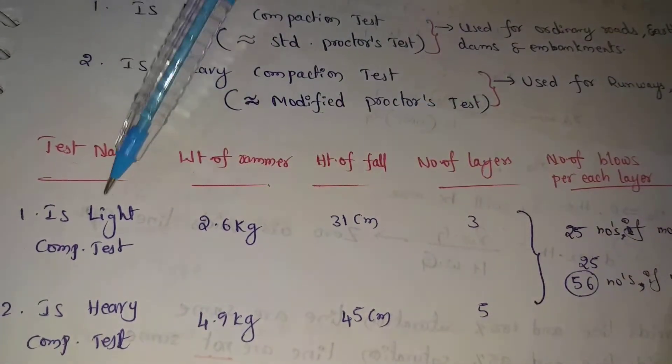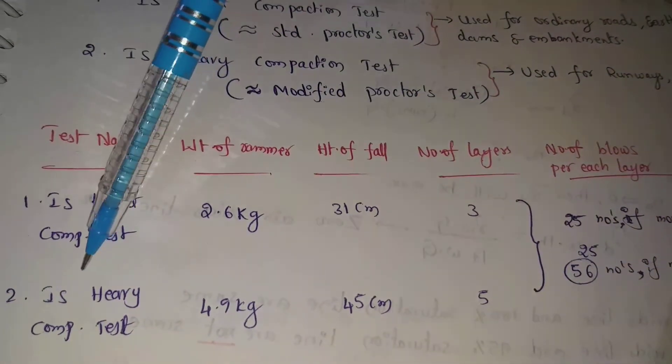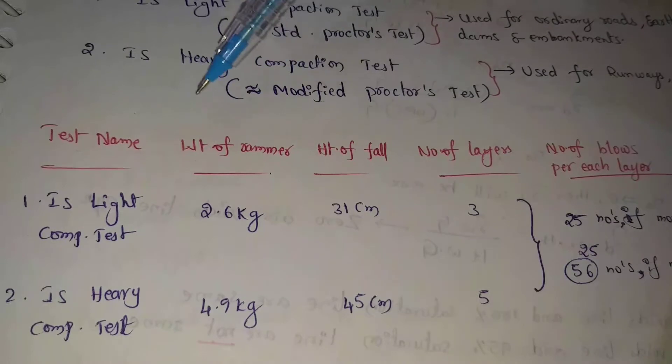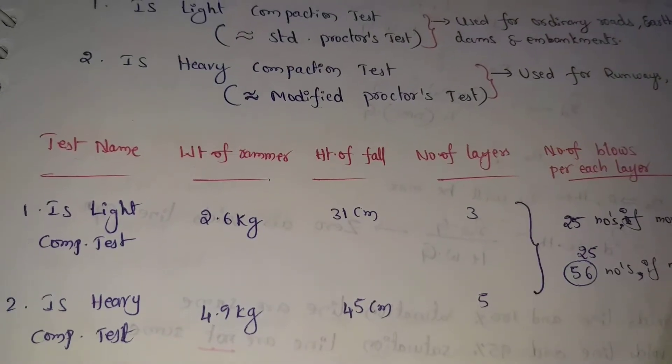So the two tests are: IS Light Compaction Test and IS Heavy Compaction Test. These two tests are used in compaction testing.